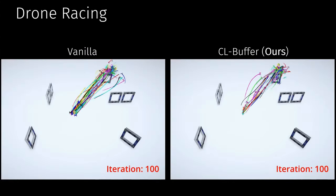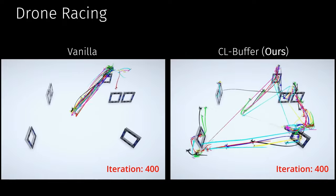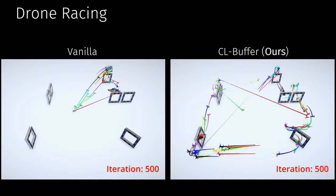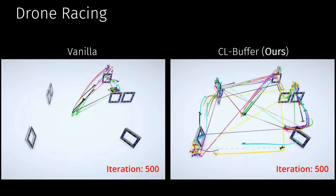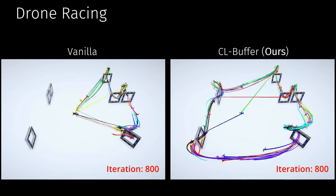Additionally, we test our proposed CL buffer on the task of drone racing. By initializing the quadrotor based on previous experienced states, an agent trained with our CL buffer can fly successfully through the race track in a much smaller number of training iterations.